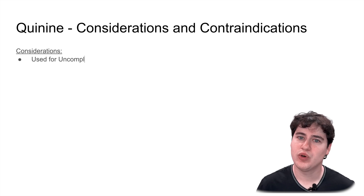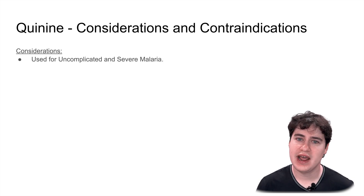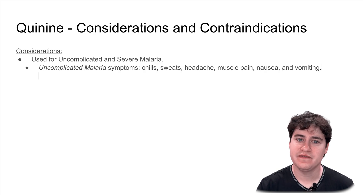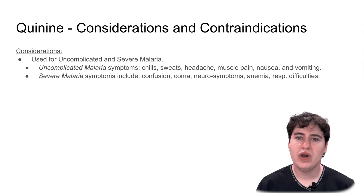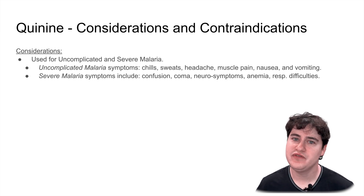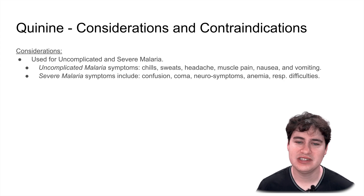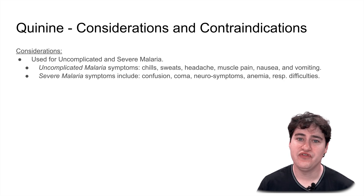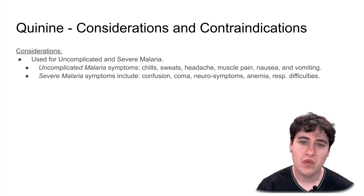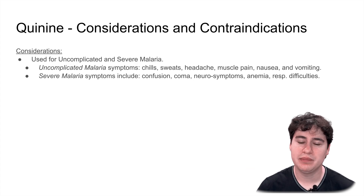Some considerations for quinine: we're going to be using it for uncomplicated malaria and for severe malaria, but primarily we're going to want to use it for uncomplicated. Uncomplicated malaria is not going to be fatal and won't have multi-organ systems being affected — you'll have things like fever, nausea, vomiting, muscle aches, GI symptoms. Now severe malaria is much worse: you could have confusion, go into a coma, have respiratory difficulties, anemia related from the plasmodium infecting your red blood cells — many things that can lead to being fatal.